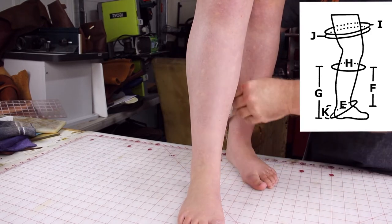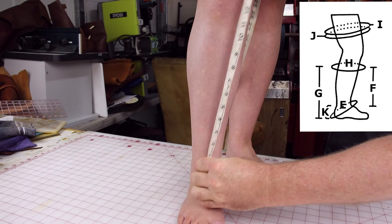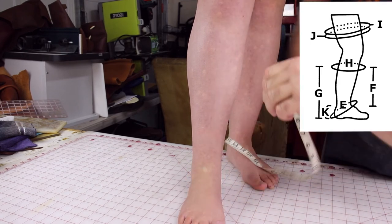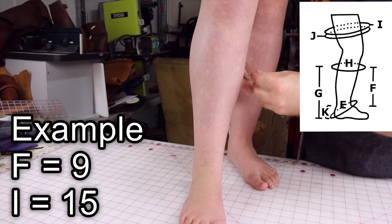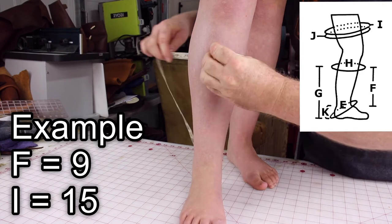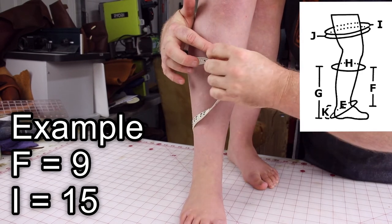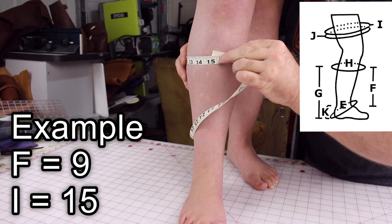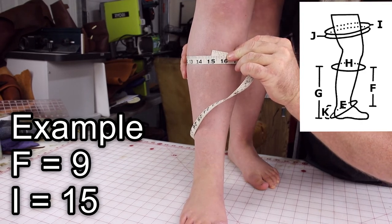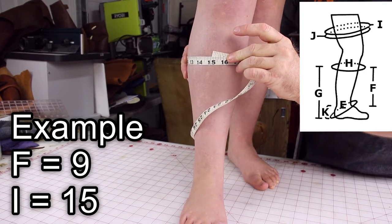If she wanted a mid-calf boot, that's going to be 9. F equals 9. And I'm going to measure the circumference. Now, it's very close to where G is, but it doesn't matter. I need it anyway. And we see that it's approximately 15 inches.